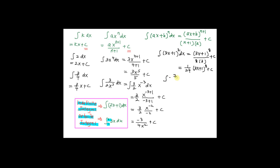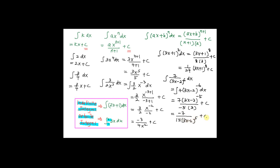How about integrating 7 over (3x − 2)^6 dx? First, bring the power up: this becomes the integration of 7(3x − 2)^(−6) dx. Now apply the formula: 7 · (3x − 2)^(−6+1) over (−5), divided by 3 — the derivative of (3x − 2) — plus c. This equals −7 over 15 · (3x − 2)^(−5) plus c. These are the three basic formulas for integration.